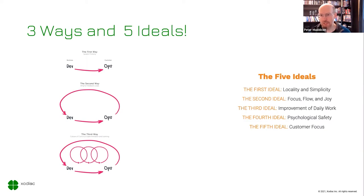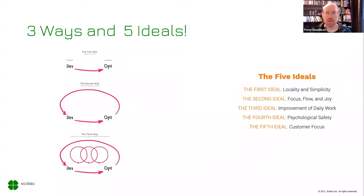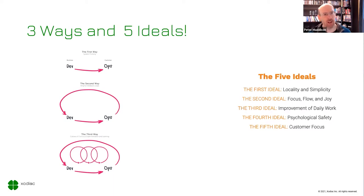The three ways: the first way is to make the system visible — see what's happening. By measuring, we can understand and improve it. The second way is creating feedback loops, understanding through monitoring what happens when we make changes. The third way is continually iterating. This also feeds into the five ideals — treating things locally and as simply as possible, so we can have more focus, flow, and joy in the work, and continually improving. To do all of this, we need psychological safety and a focus on what our customers need.